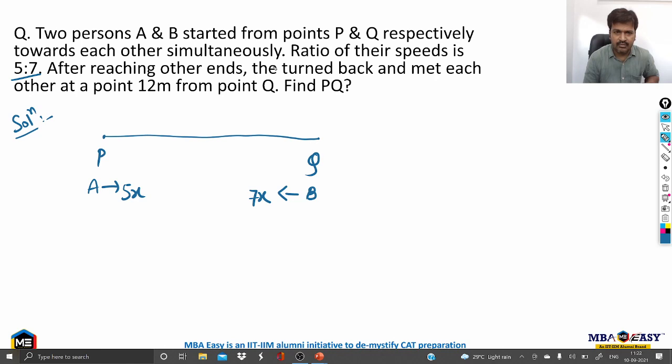After reaching other ends, they turn back and met each other at a point 12 meter from Q. So at a point 12 meter from Q, let's say this point is R, this is a meeting point. They reach to the other end and then turn back and then again they approach, they are approaching each other and they meet each other at point R. And this point R is 12 meter from Q. So, this distance is given as 12 meter. You have to find PQ.